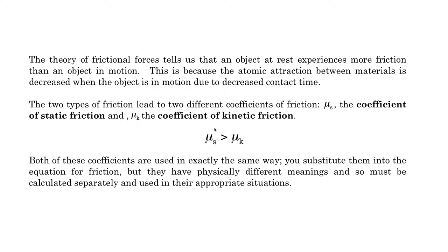One of the reasons mu-s is bigger than mu-k is because the atomic attraction is decreased when there's motion. When two things are sitting at rest, there's time for those electrostatic attractions to become a little more permanent. But when two things are moving past each other, those atomic attractions don't have as much time to form because there's less contact time. This is why the coefficient of static friction is bigger than kinetic, giving us a stronger force of friction when things are at rest than when in motion.